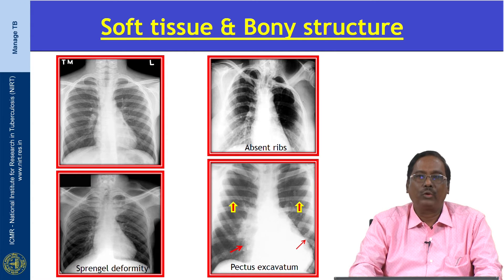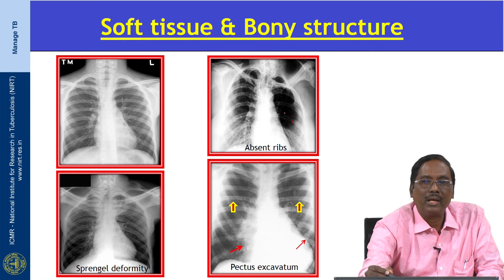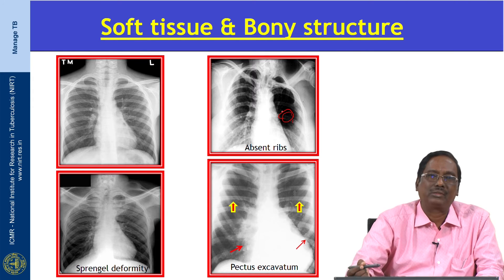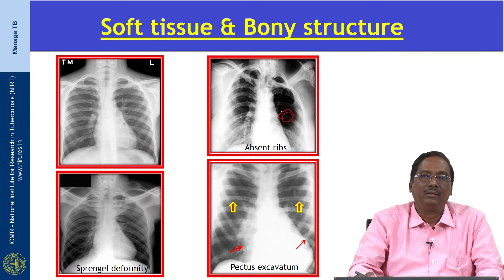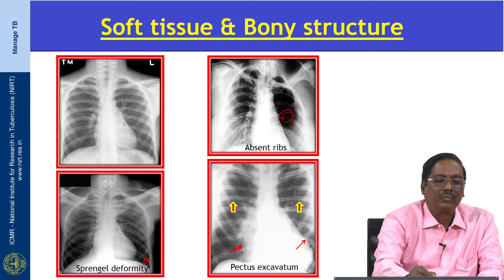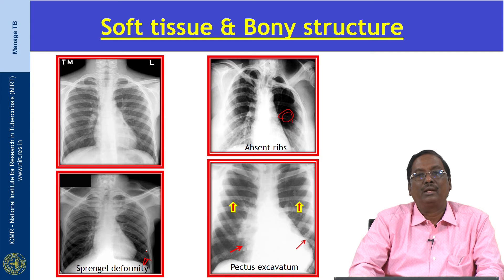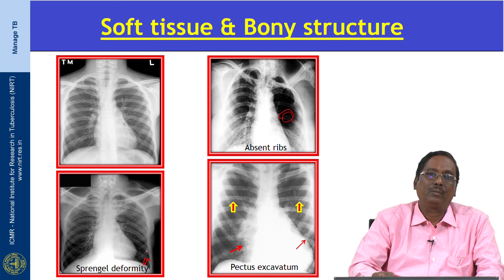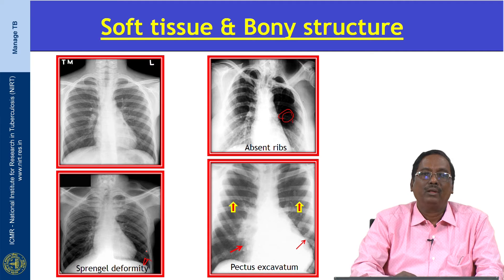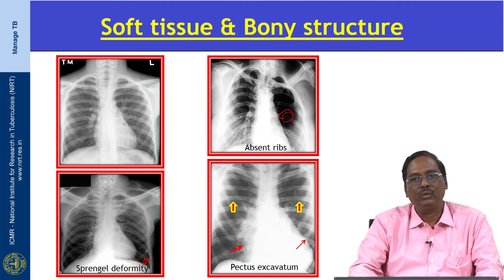This X-ray shows missing ribs, and the clavicle is also missing. This is a patient with Sprengel's deformity, where the scapula is placed in a higher position — a congenital problem. X-ray can detect the abnormality; however, MRI is very useful to confirm the extent of pathology.